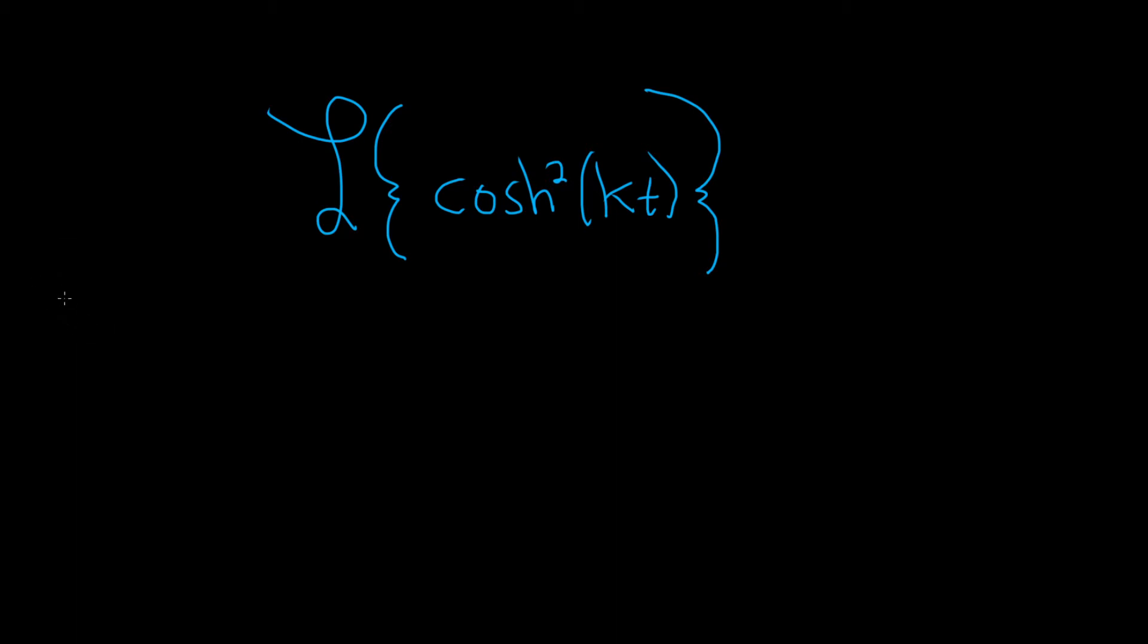So recall that the hyperbolic cosine of, say, x is equal to, well, it's the average of e to the x and e to the negative x. So it's e to the x plus e to the negative x, and it's all divided by 2.